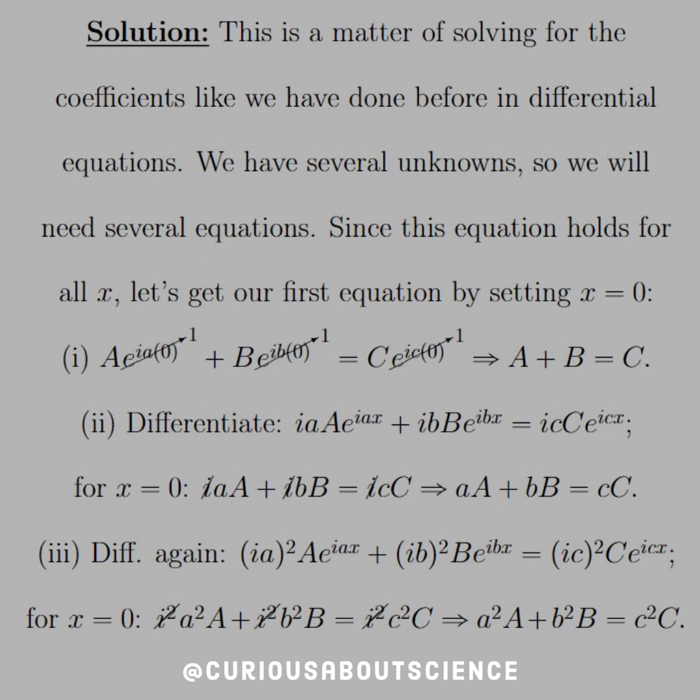So if we set x equal to 0, all the exponentials cancel to 1 since e^0 is 1. Pretty easy there. So right off the bat, we show that A plus B equals C. Done. Now for the rest, we have to do a little more manipulation work to solve for the arguments a, b, and c's. So let's go ahead and differentiate once.